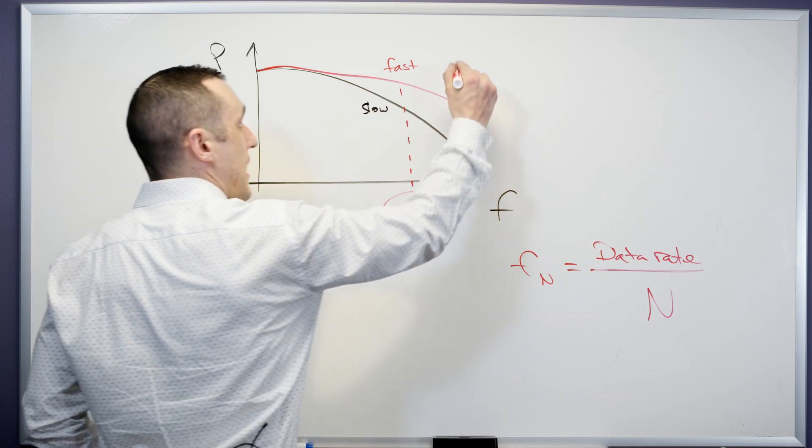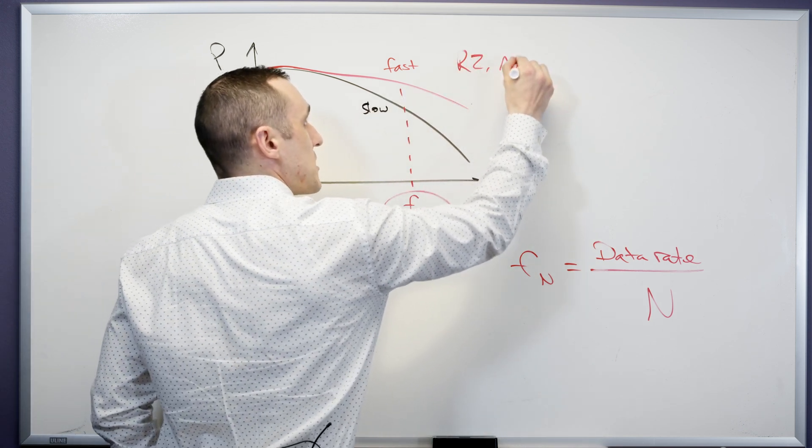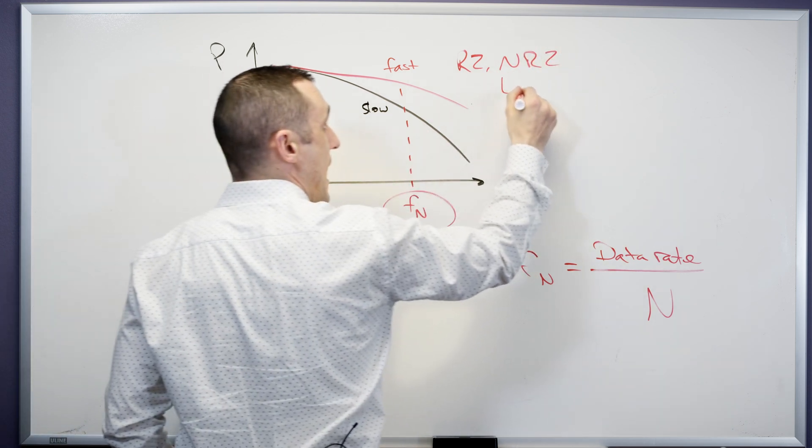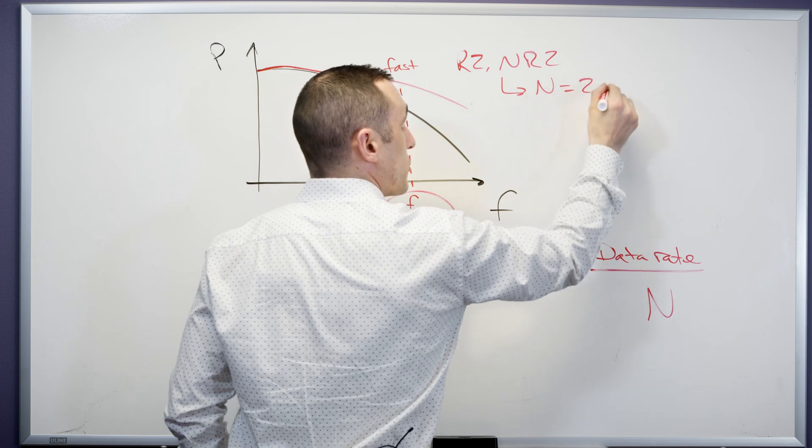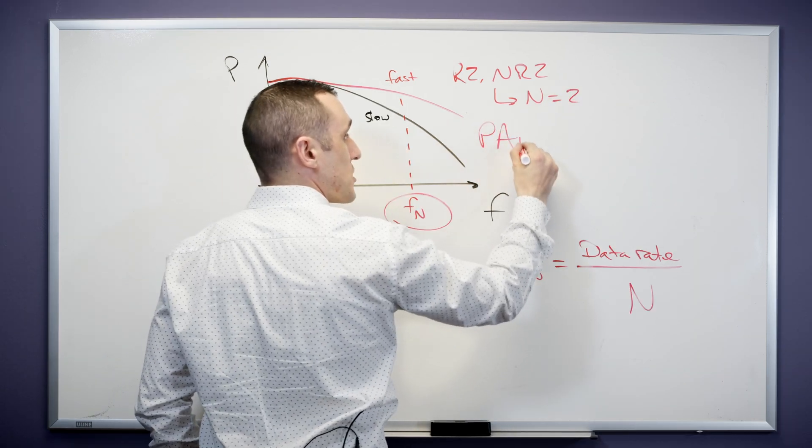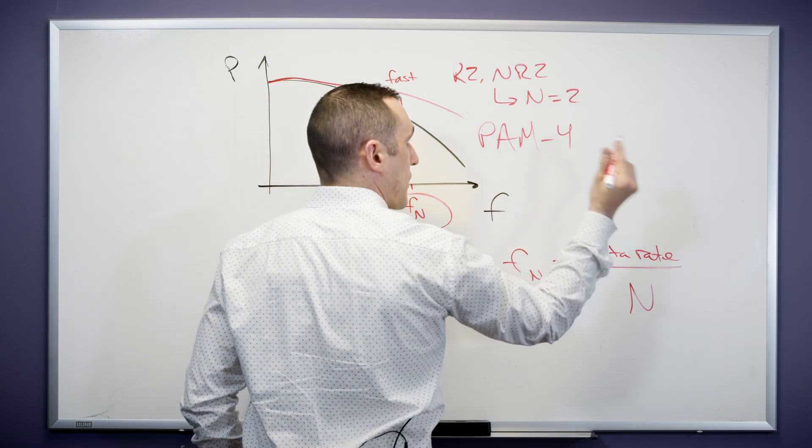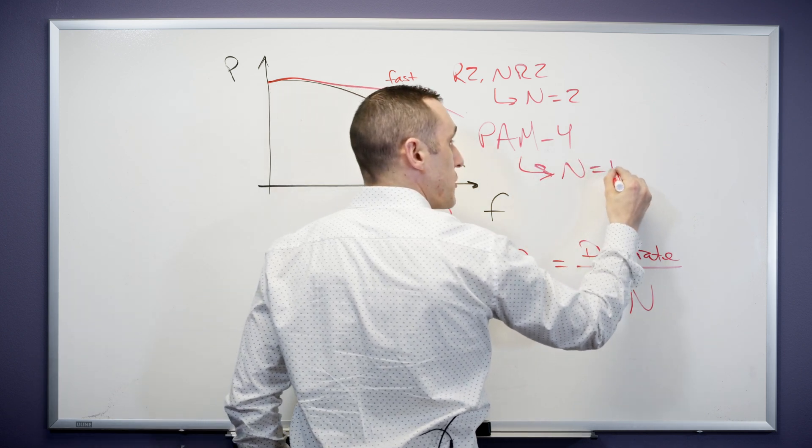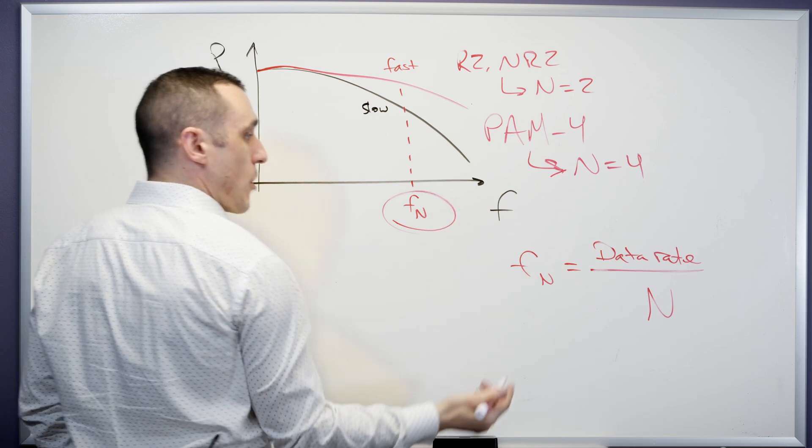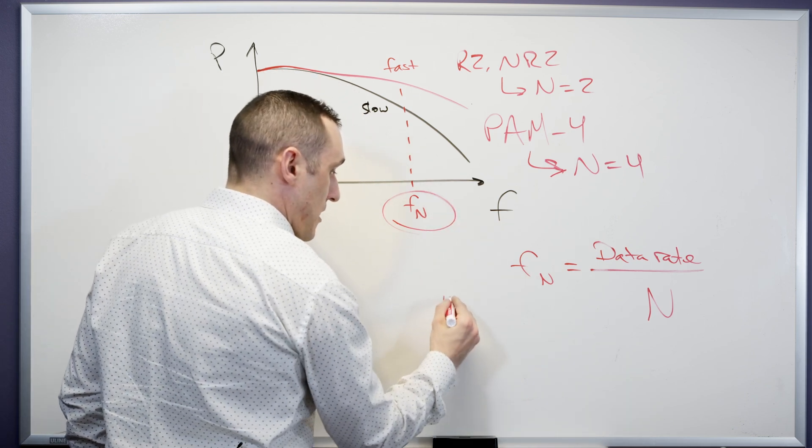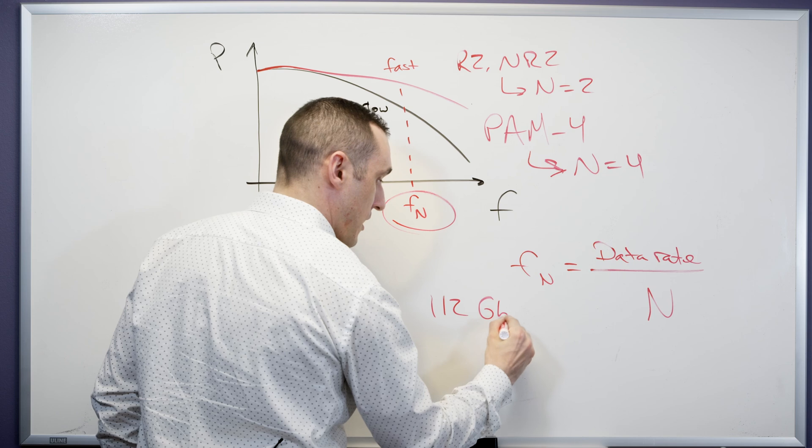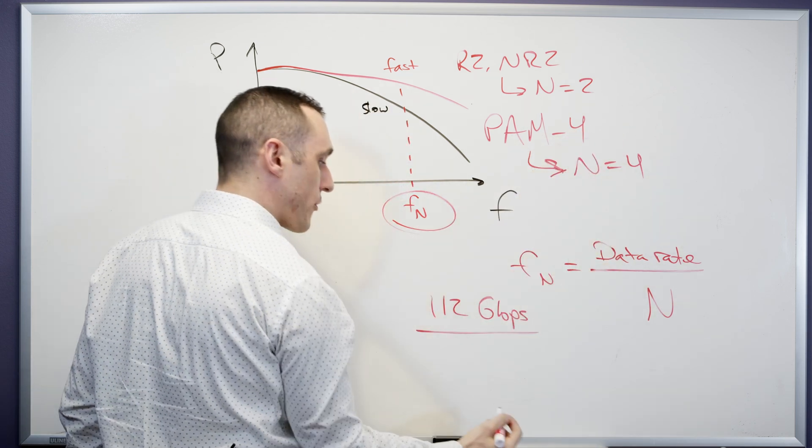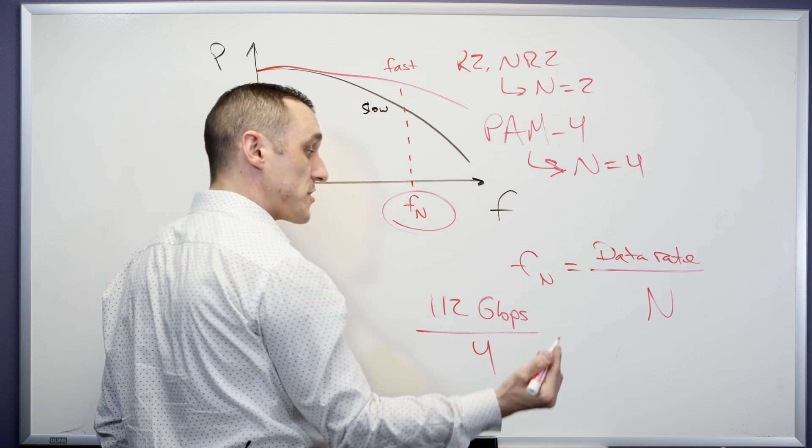If we have RZ or NRZ signaling, which is two levels, we then have n equal to 2. If we have PAM 4, which is going to be much more advanced in a higher level of technology, we then have n equal to 4. Let's just say for a moment that our data rate is 112 gigabits per second and we're doing this with a PAM 4 format. So, n equals four signal levels. That means our Nyquist frequency is 28 gigahertz.